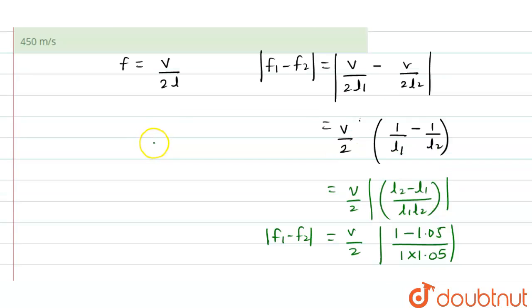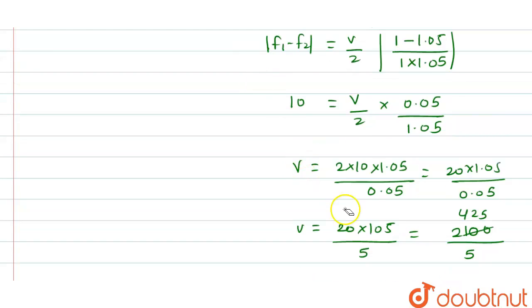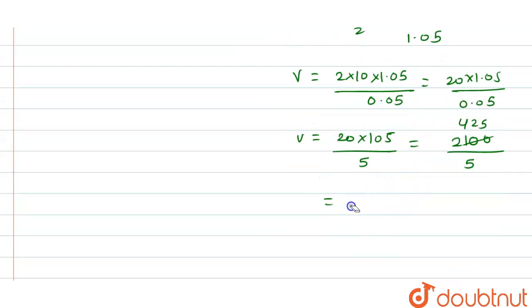We have to check the options here. The final answer will be equal to 420. We can erase all this, and the value of 20 into 105 divided by 5 will be equal to 420 meter per second.